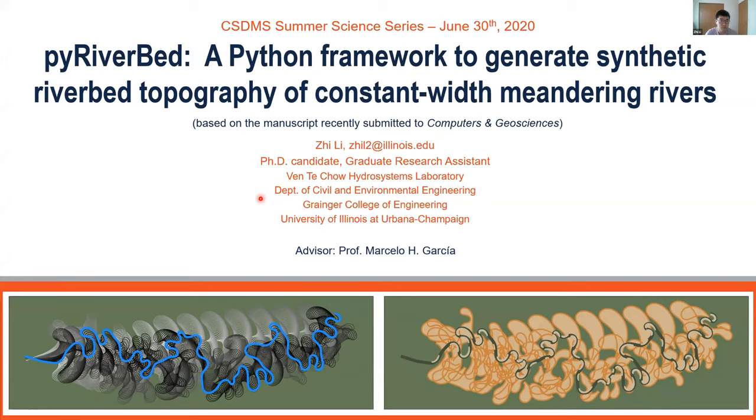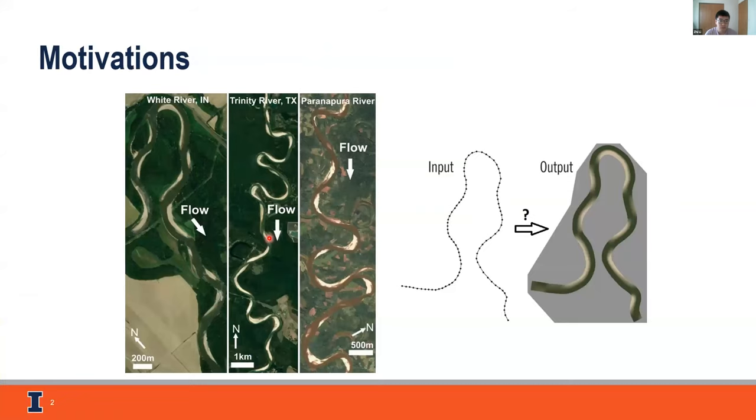Meandering is one of the most unique processes in Earth's surface dynamics. If you open Google Earth or any similar tools, it will be quite easy to find meandering rivers by their iconic shape. You'll also likely see the beautiful point bar pattern. The figure on the right reveals what we're trying to do with the present model. The research question is, can a model use river centerline coordinates and give back the riverbed topography in equilibrium?